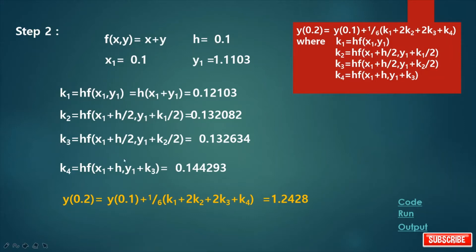After calculation of these values, the value of y(0.2) is y(0.1) plus 1/6 into (K1 plus 2K2 plus 2K3 plus K4). We already calculated the value of K1, K2, K3, K4, and the value of y(0.1) is 1.1103. After calculation we get the result.